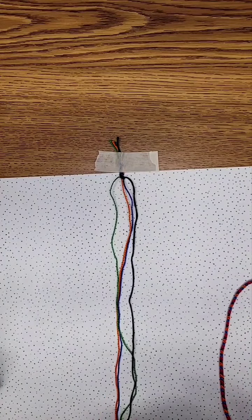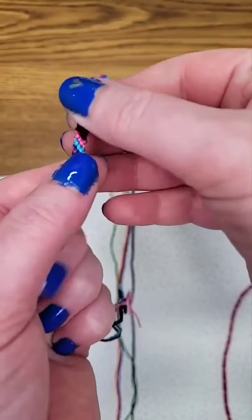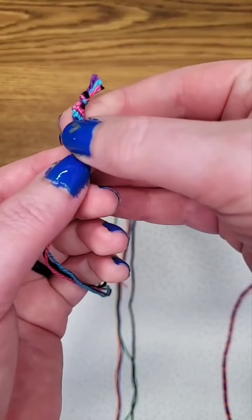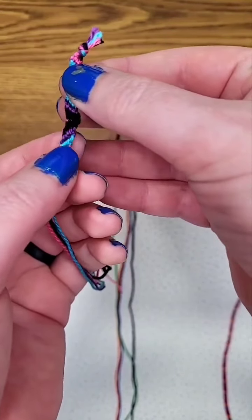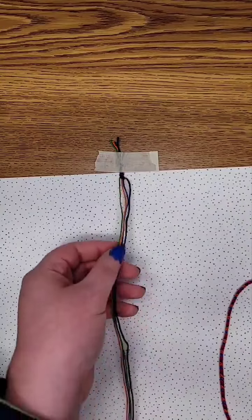Now the opposite of a forward knot is a backward knot. And so you can see on this one, I started with the forward knot, and then I switched to a backward knot. And the backward knot is the same, but backwards, as a forward knot.